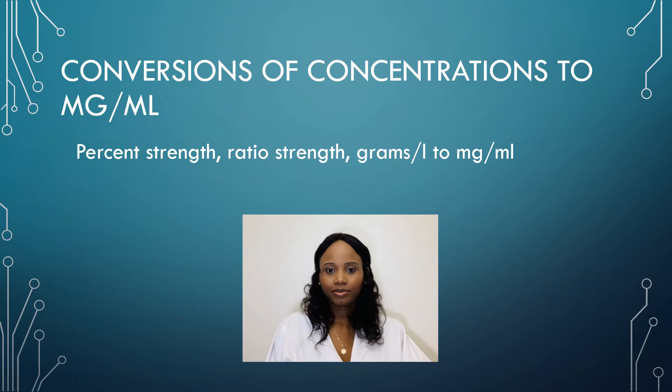Hey everyone, it's Dr. Jess. In today's video I'm going to show you how to do simple conversions of different types of concentrations to milligram per milliliter. We'll look at percent strength — more specifically percent weight and volume — ratio strength, and also grams per liter, and how to convert those to milligram per milliliter. Make sure to like the video and subscribe to my channel.